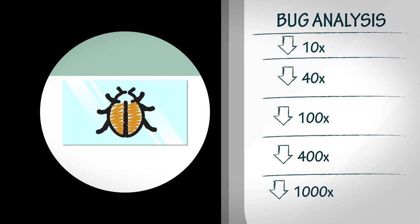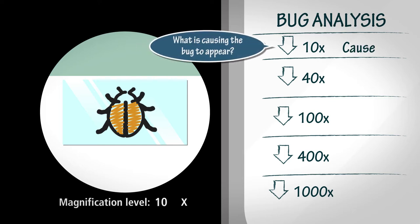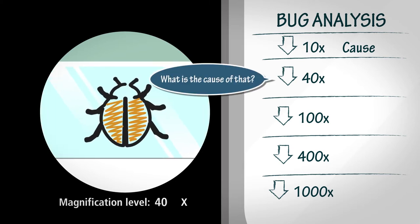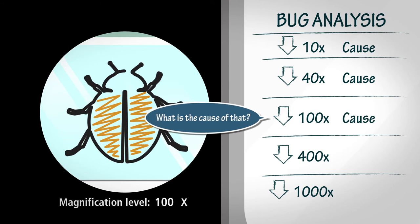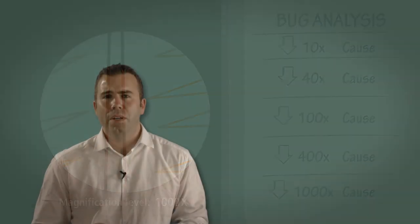Start off by asking this: What is causing the bug to appear? Note down the answer, and then ask, but what is the cause of that? And repeat this exercise until the team are satisfied that they have identified the true source, or the point of origin for this bug.